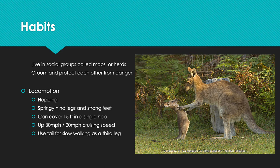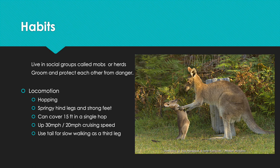Kangaroos live in social groups called mobs or herds, where they groom and protect each other from danger. Their primary form of locomotion is hopping, making them one of the only mammals to use hopping as locomotion. Their springy hind legs and strong feet can cover up to 15 feet in a single hop. They can move as fast as 30 miles per hour, with a cruising speed of 20 mph, and they use the tail as a third leg for slow walking.